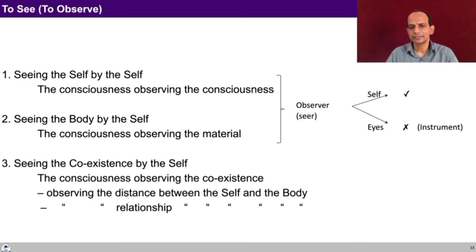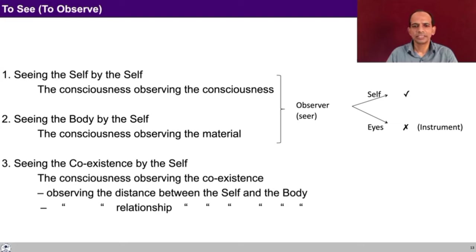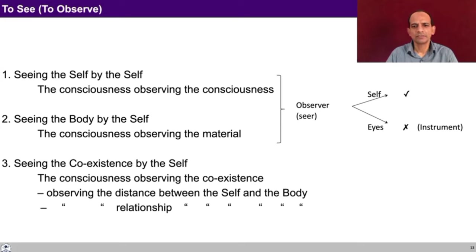The self is the observer, the seer, the knower — not the eyes. The eyes are only an instrument. Once you are able to see that eyes are only an instrument and you are the seer, it doesn't matter whether you keep your eyes open or closed. Whether you are sitting, standing, or walking hardly matters — essentially these are activities when you are interacting with the body, but your observation can continue. The self is the knower, the seer, the doer and the observer.